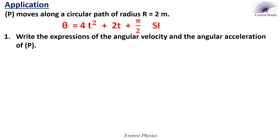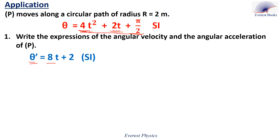The angular velocity is the time derivative of the angular abscissa. Differentiating with respect to time: the derivative of 4t² is 8t, the derivative of 2t is 2, and the derivative of π/2 is 0. Then theta prime equals 8t + 2 in SI units. Now for the angular acceleration, which is the time derivative of the angular velocity: the derivative of 8t is 8, and the derivative of 2 is 0. Therefore, theta double prime equals 8 radians per second squared.